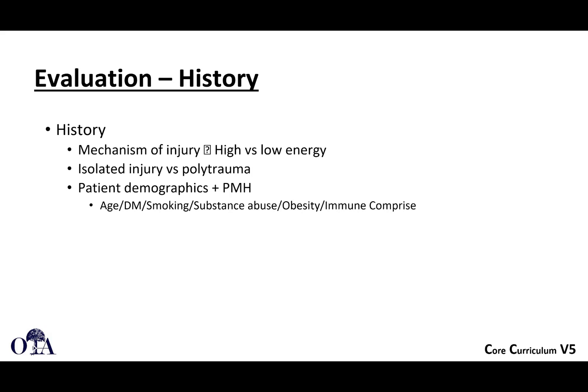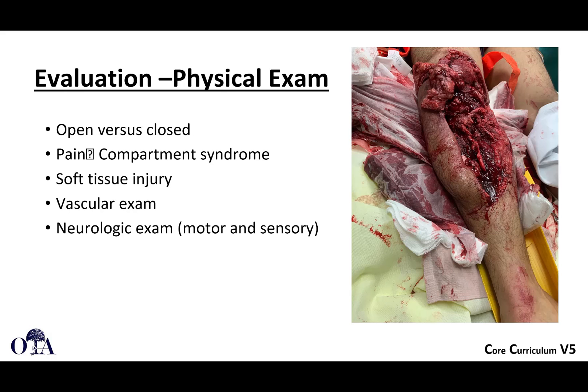On history, you want to get an idea of the mechanism of injury — high-energy versus low-energy — isolated versus polytrauma, and the patient's past medical history. On physical exam, identify whether it is open versus closed on inspection. Assess for pain with passive stretch and swelling, and have concern for compartment syndrome. Even if the fracture is closed, a vascular and neurologic exam is very important, and reassess to make sure you're not missing a compartment syndrome.